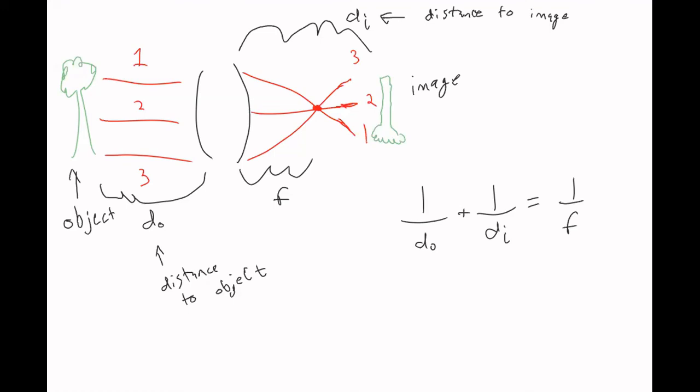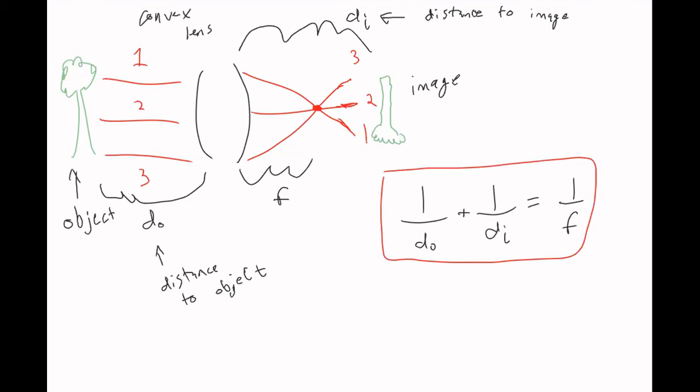The relationship between all of these distances is: one over the object distance plus one over the image distance equals one over the focal length. This was the picture for a convex lens, and this same equation is going to apply for both types of lenses, but the picture is going to look different.